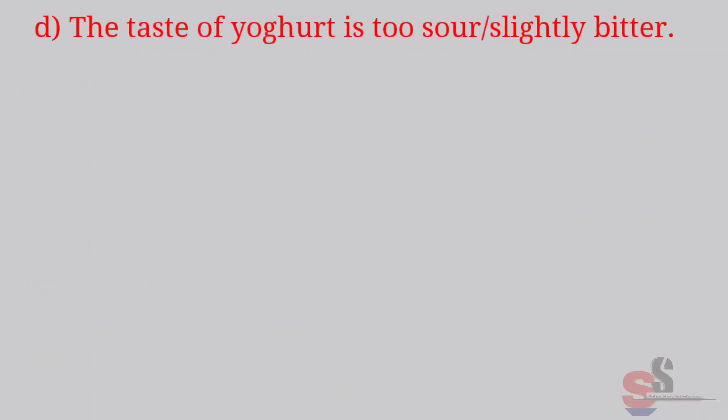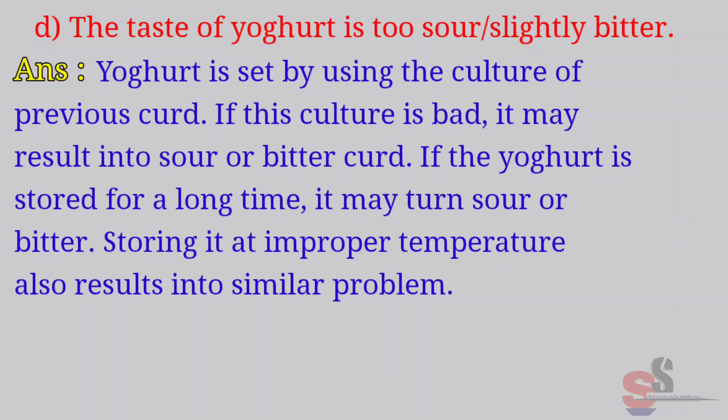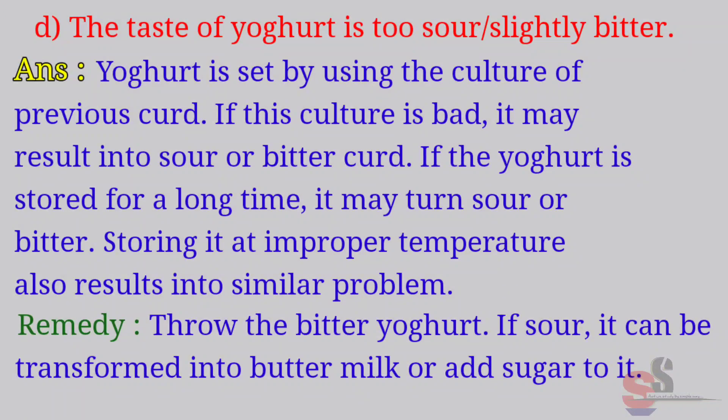D. The taste of yogurt is too sour or slightly bitter. Answer: Yogurt is set by using the culture of previous curd. If this culture is bad, it may result in sour or bitter curd. If the yogurt is stored for a long time, it may turn sour or bitter. Storing it at improper temperature also results in a similar problem. Remedy: Throw the bitter yogurt. If sour, it can be transformed into buttermilk or you can add sugar to it.